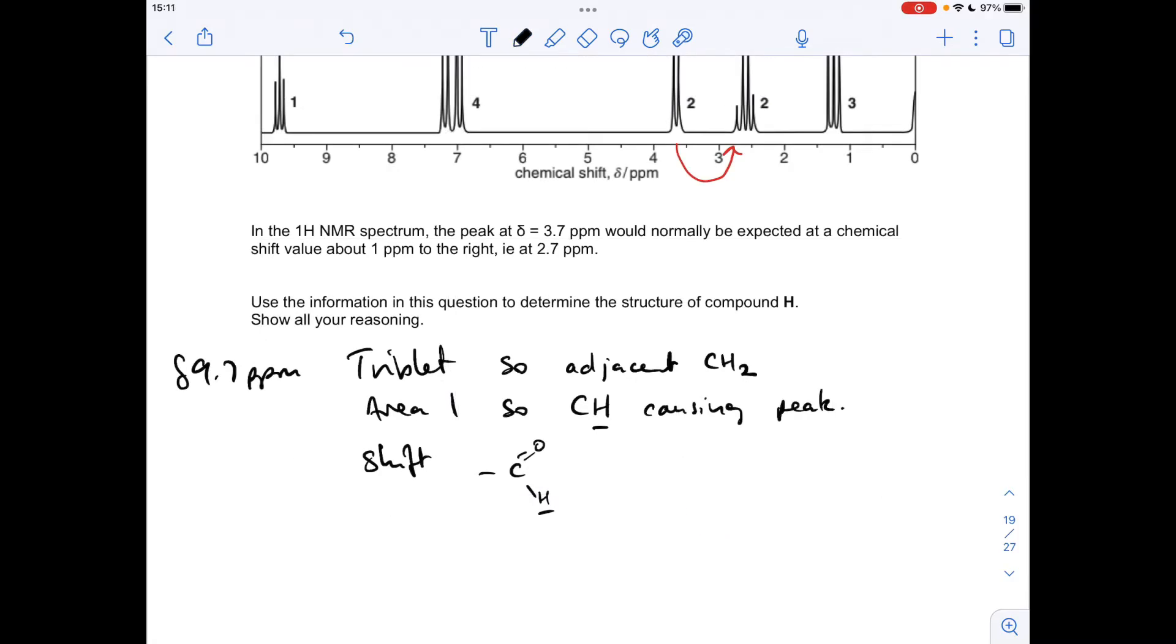So there it all is written up there. So essentially, we have got C double bond O with that single hydrogen. That's what's caused that signal. And next to it is a CH2 group, and that's what's caused the triplet.